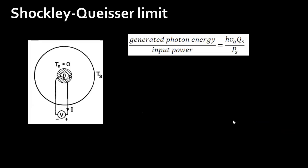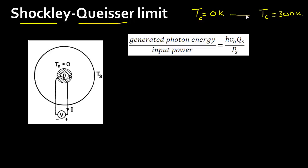Before deriving the actual Shockley-Queisser limit, the paper presents a fun exercise: what would be the limit of this solar cell if the temperature of the cell were zero Kelvin? So before evaluating the realistic case with the cell at 300 Kelvin, they first evaluated the problem for the case of cell temperature equal to zero Kelvin.